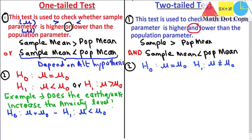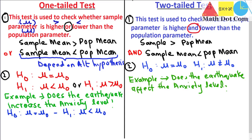This is how one-tailed and two-tailed differ in terms of hypothesis. For the two-tailed earthquake example, the research question is 'does the earthquake affect the anxiety level?' — we are not mentioning whether anxiety increases or decreases. The null hypothesis H0 is mu equals mu-naught, meaning the anxiety level of the sample equals that of the population. The alternative hypothesis H1 is mu is not equal to mu-naught, because we are not sure whether it will increase or decrease.